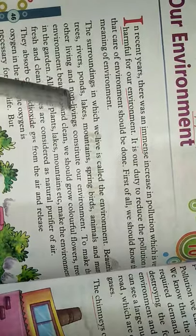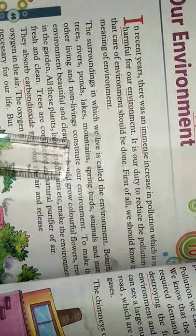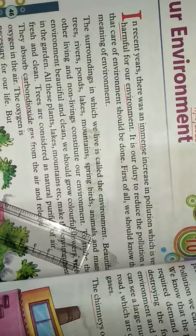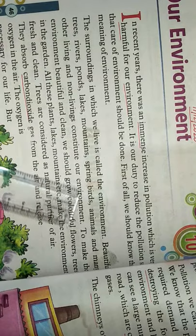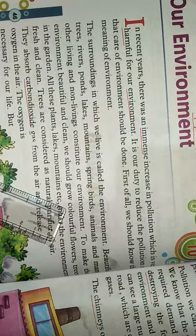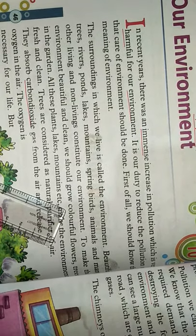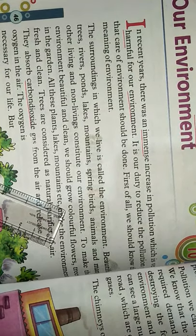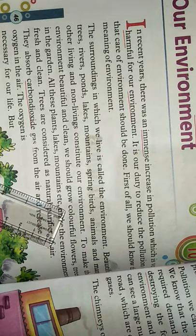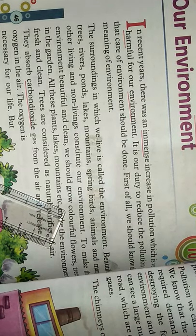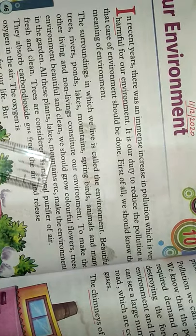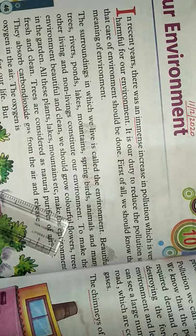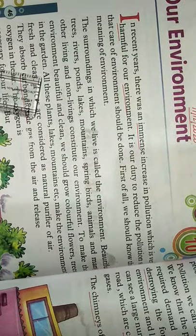Beautiful trees, rivers, ponds, lakes, mountains, birds, animals and many other living and non-living things constitute our environment. To make the environment beautiful and clean, we should grow colorful flowers and trees in the garden.